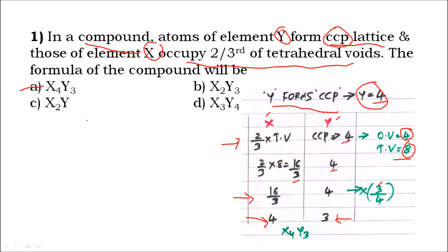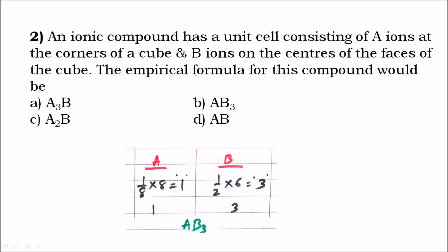Next question: an ionic compound has a unit cell consisting of A ions at the corners of the cube and B ions on the centers of the faces. The empirical formula for this compound would be — so it is made up of two ions, A and B. A is at the corner, shared by eight unit cells, so the portion is one-eighth into eight equals one. So A equals one.